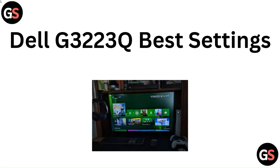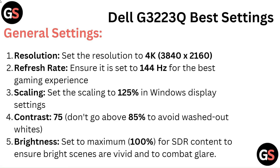Hello everyone. In this video we are going to tell you about Dell G3223Q best settings. General Settings: Resolution — set the resolution to 4K 3840x2160. Refresh Rate — ensure it is set to 144Hz for the best gaming experience. Scaling — set the scaling to 125% in Windows Display Settings.